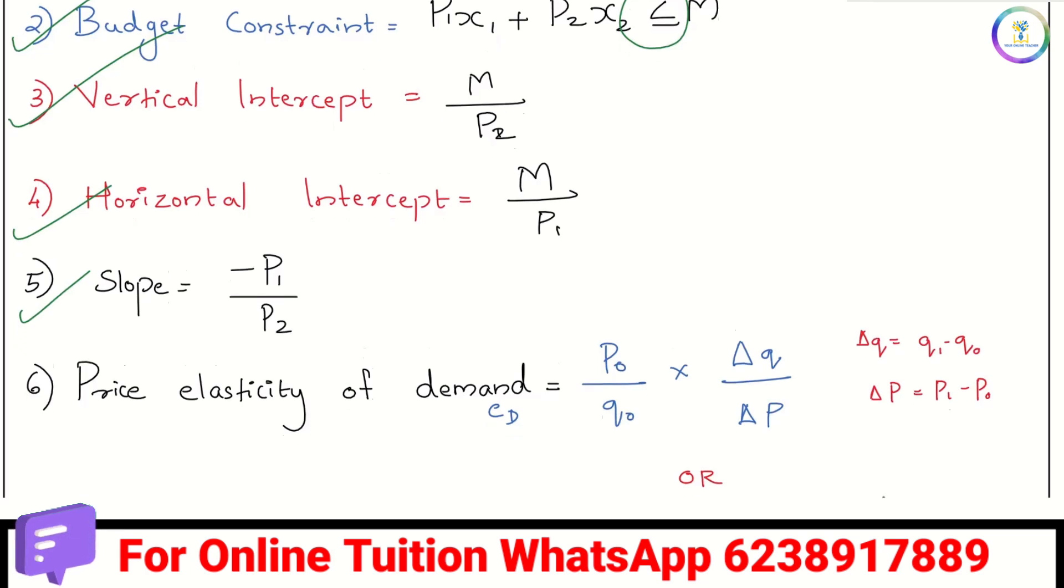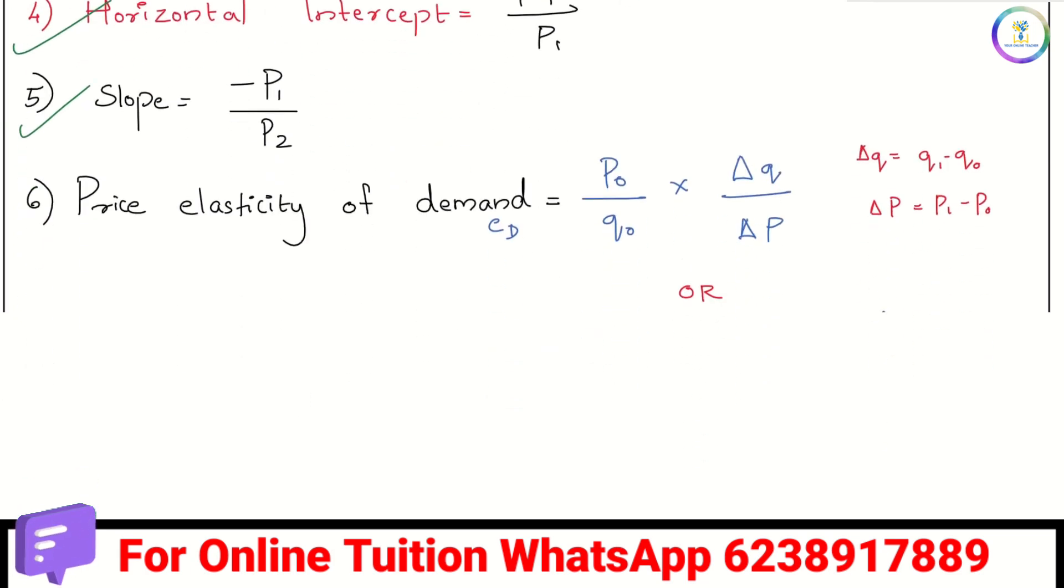Price elasticity of demand is very important. Price elasticity of demand is p0 by q0 into delta q by delta p. That is, delta q is q1 minus q0, delta p is p1 minus p0.